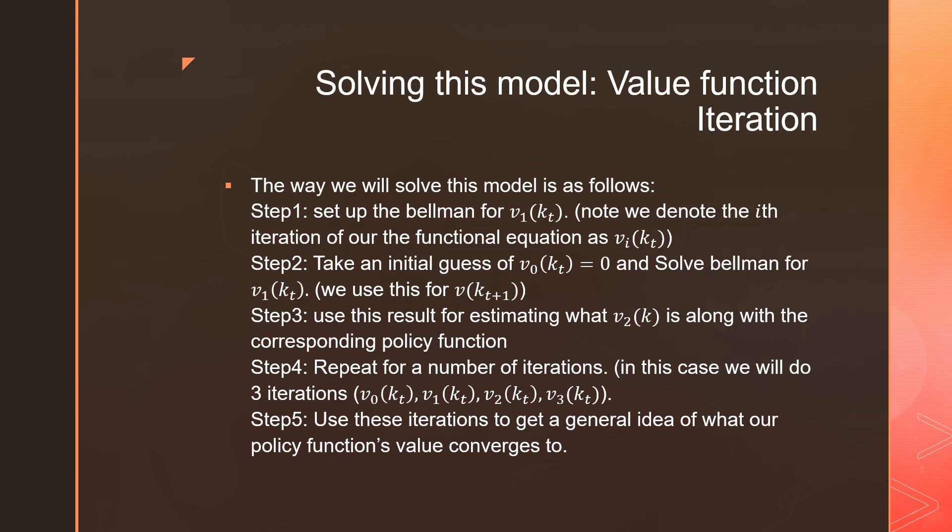Not counting v₀, even though I have it there on this list. And step number five is that we're going to look at these iterations to get the general idea of what our policy function converges to. And this is based on just an educated guess. But if you wanted to, you can repeat the process over and over again to get that result.